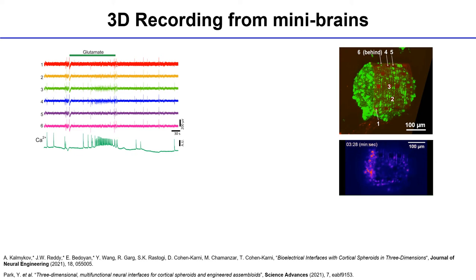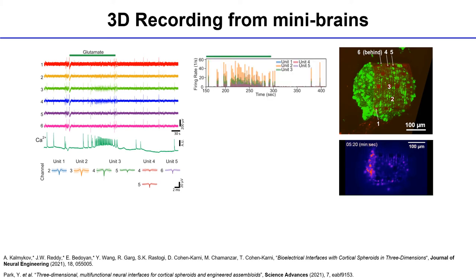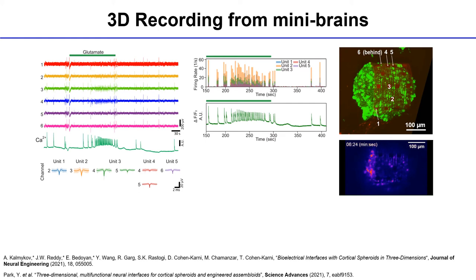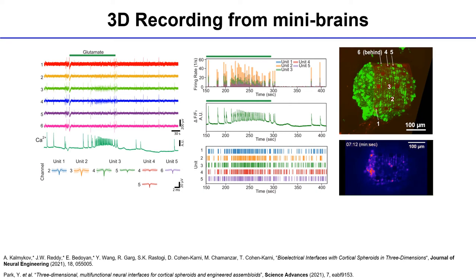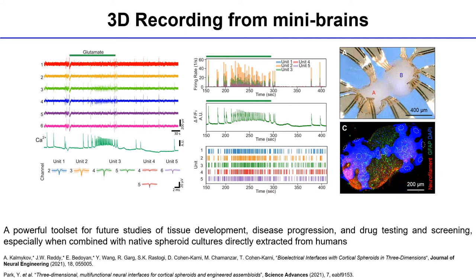In the calcium imaging you can see an increase in firing rate. One can perform single-unit analysis and firing-rate analysis and correlate it with calcium imaging. This is a unique opportunity to use this new tool set for future studies of tissue development, disease progression, and drug testing and screening in human tissue. We also note related work published around the same time from John Rogers' lab on fusing bioelectronics with assembloids of cortical spheroids.